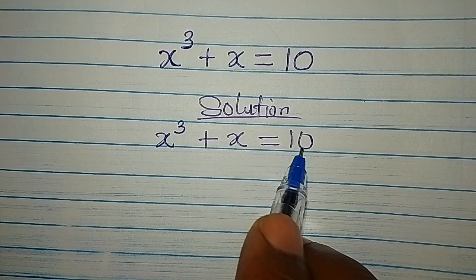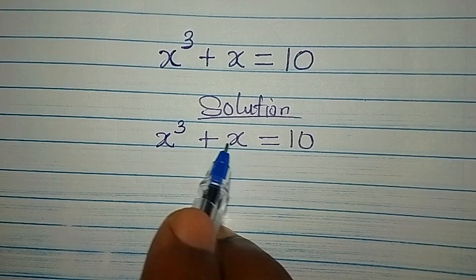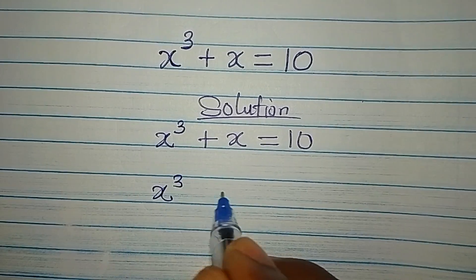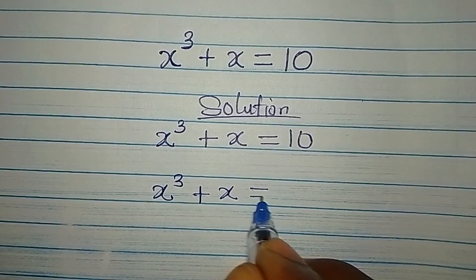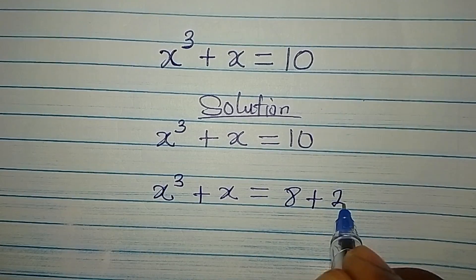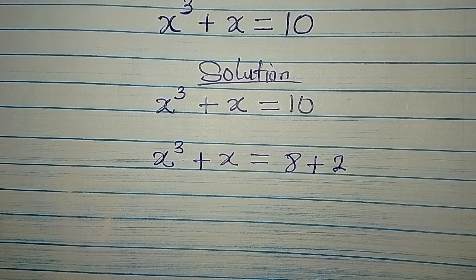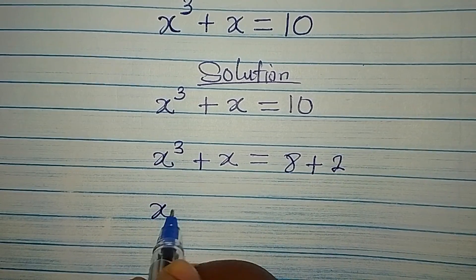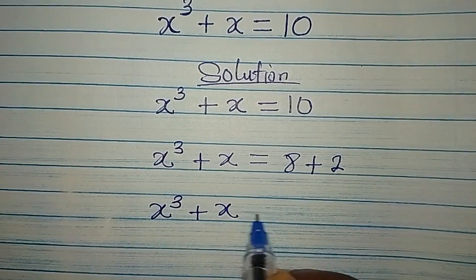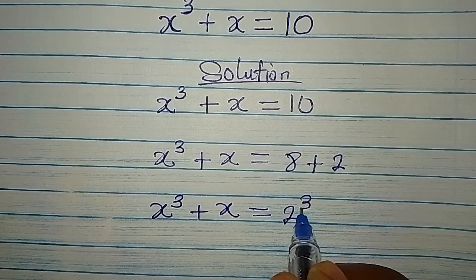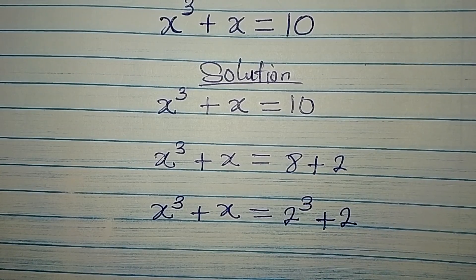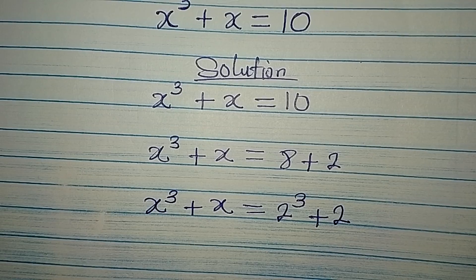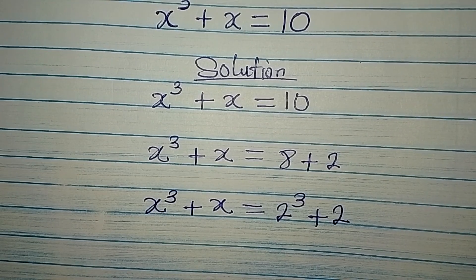Here's what I want to do first. This 10 can be expressed in the form of x to the power of 3 plus x. So if that is the case, then x³ + x will now be 8 plus 2. If we continue, we can write this as x to the power of 3 plus x equals 2 to the power of 3 plus 2. Looking at both sides, it is obvious that the real value of x is 2.